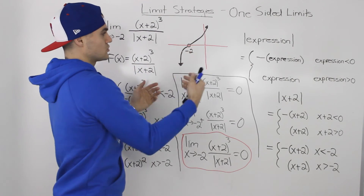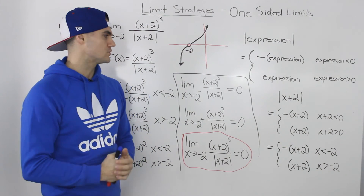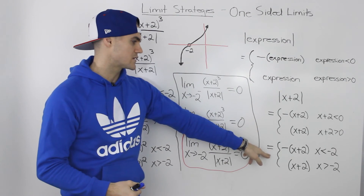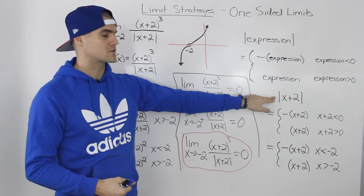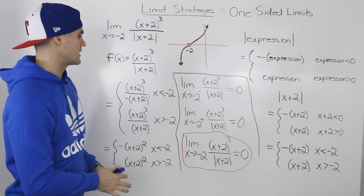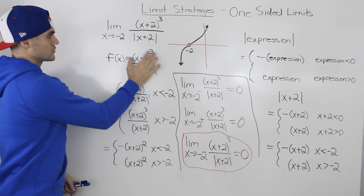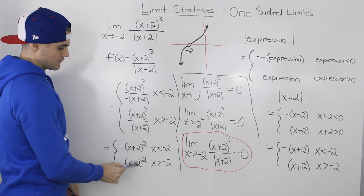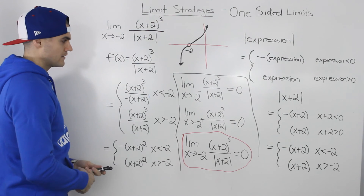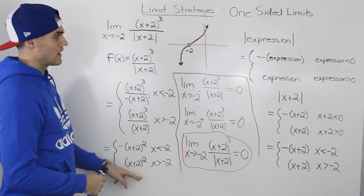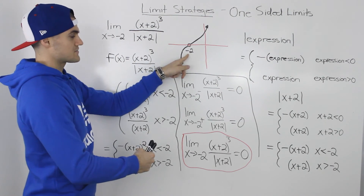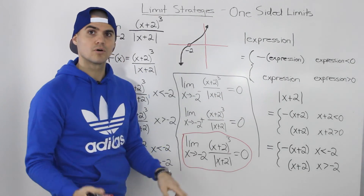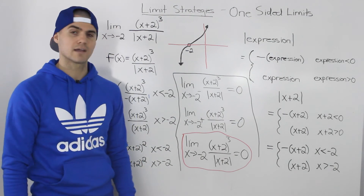Notice how in this case, unlike the other examples we did for one-sided limits, the limit exists at a y value of 0 — from both sides it approaches that same value. We just followed the same process: get the simplified piecewise function for the absolute value expression, incorporate it into the original function. The trickiest part is graphing, but using a table of values helps. In this example, unlike the other ones, the limit exists.